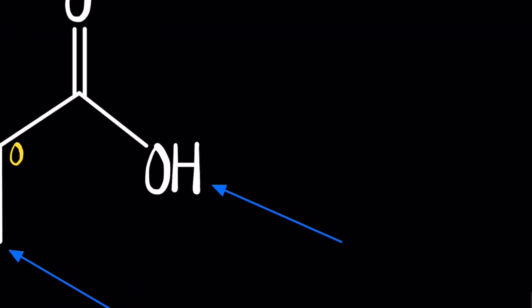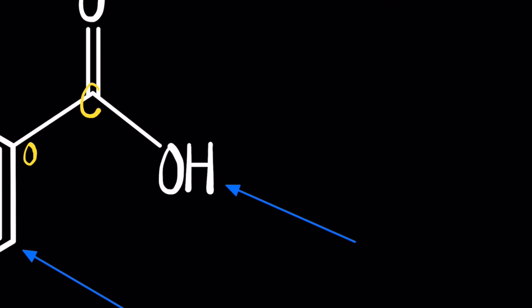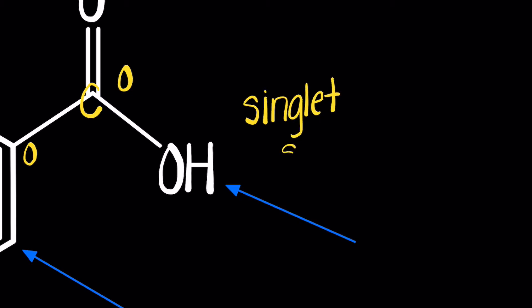Looking at the hydrogen attached to the carboxylic acid — this carbon has zero hydrogens attached and that is the only neighboring carbon atom for this hydrogen. Therefore, this will be a singlet. Denote this with S or simply write singlet.